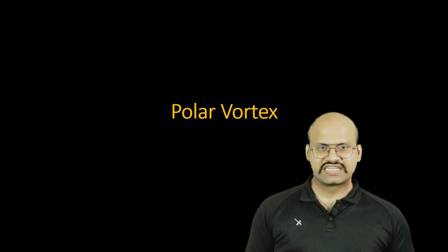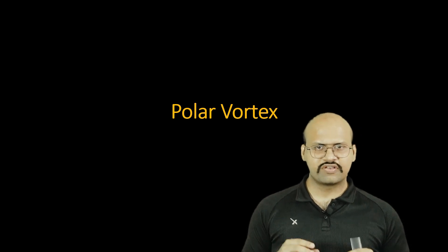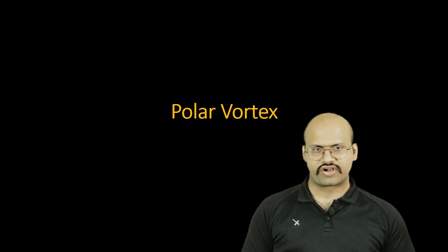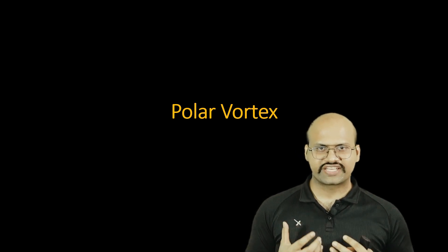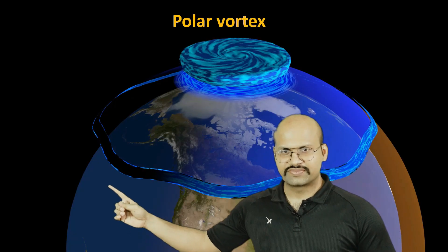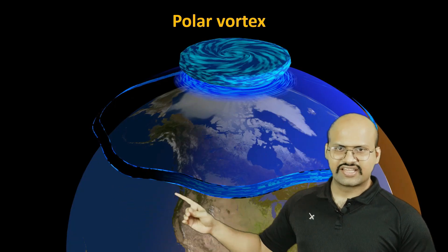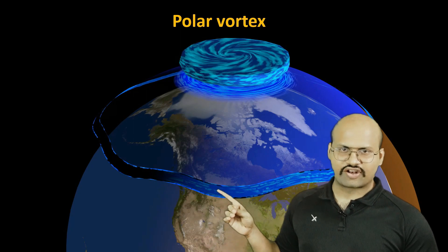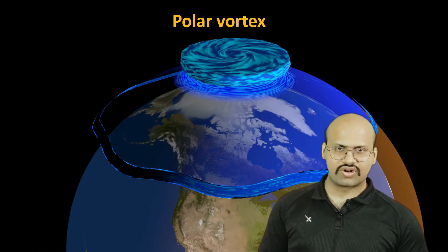The next topic is the polar vortex. We have discussed the polar vortex in great detail in another video, so here we will only briefly see the role of jet streams in polar vortex. When the polar vortex is very strong, the jet streams do not show much meandering — they move almost in a straight or circular line, which is called zonal flow.